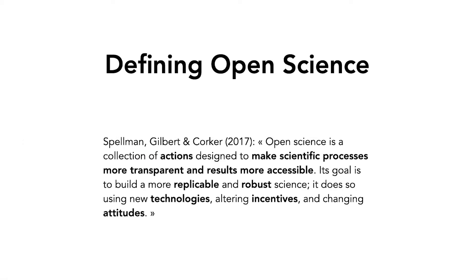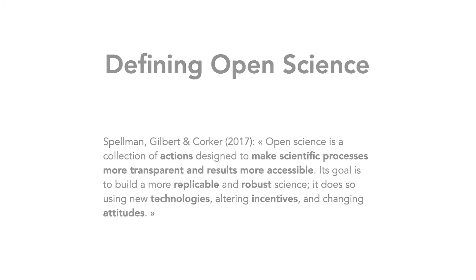Another definition, which can be found in one of the handbooks for open science, describes open science as a collection of actions designed to make scientific processes more transparent and results more accessible. The goal of open science is thus to build a more replicable and robust science, which open science does by using new technologies, altering incentives, and changing attitudes.